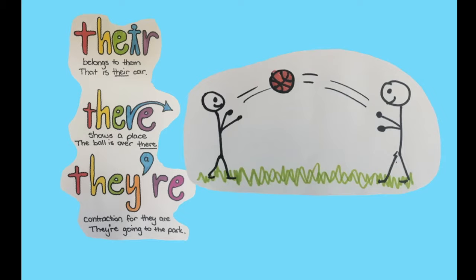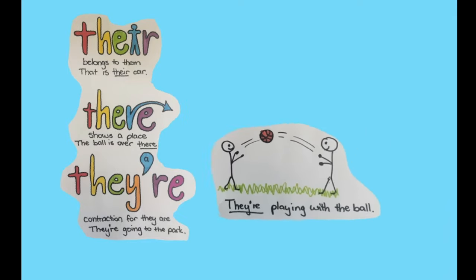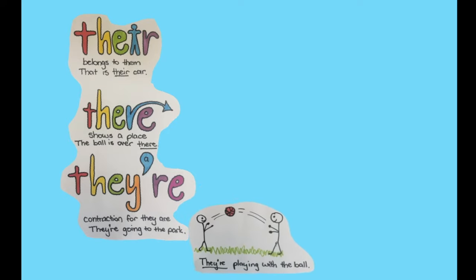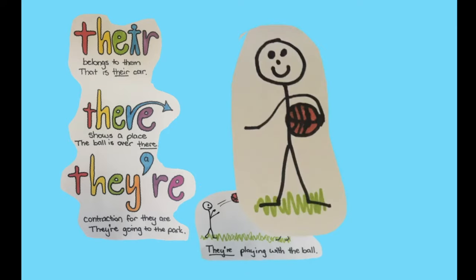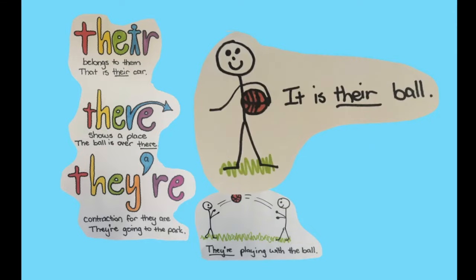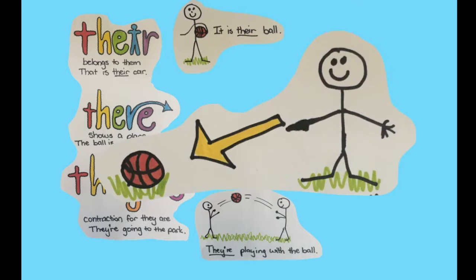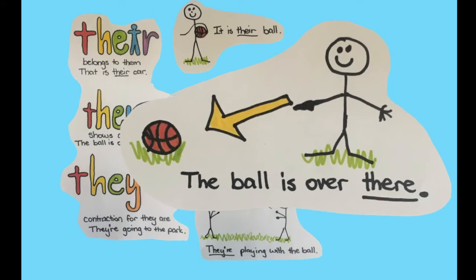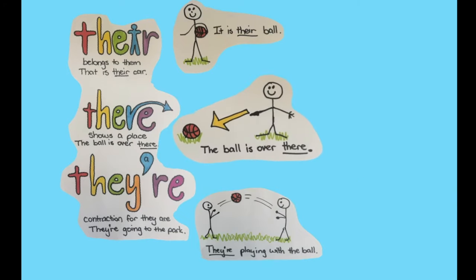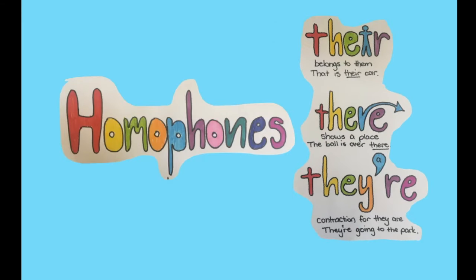What about 'they're playing with the ball'? It's T-H-E-Y-R-E — they're playing with the ball. It's the contraction for 'they are playing with the ball.' Now what about 'it is their ball'? It would be T-H-E-I-R, because it is their ball — it's theirs, it belongs to them. And what about 'the ball is over there'? T-H-E-R-E, because it is showing me where it is, the place that it is. Now you know your homophones for there, there, and there — there's theirs everywhere!